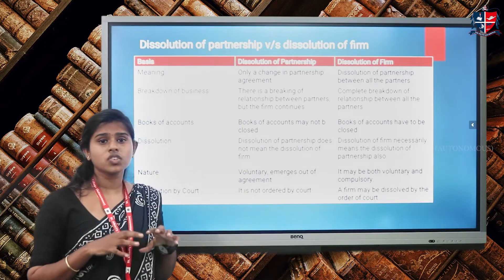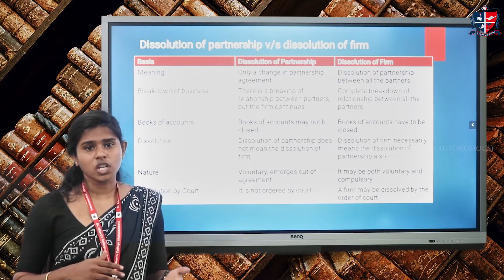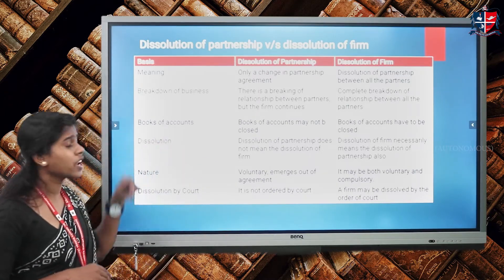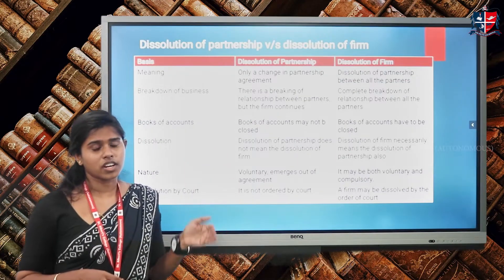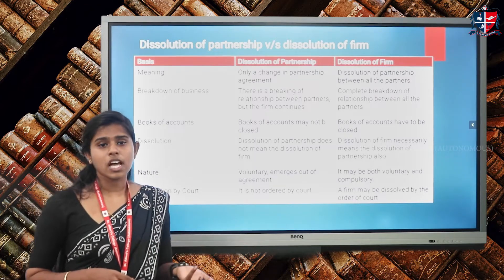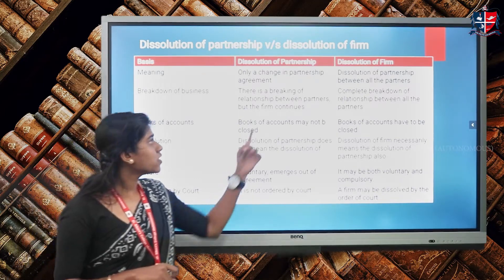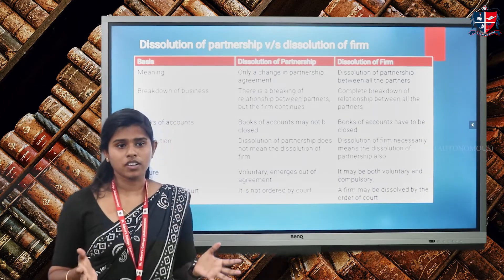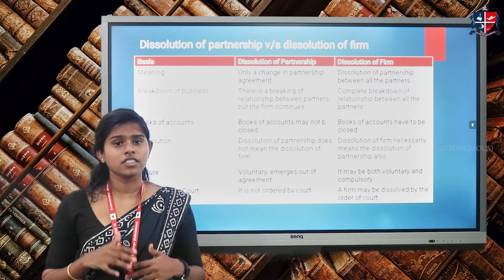In dissolution of firm, it is the dissolution between all the partners — the relationship between all the partners is breaking down and no more business is continuing. Regarding breakdown of business: in dissolution of partnership there is a breaking of relationship but the firm continues. There is only a reconstitution of the partnership agreement, which is mainly applicable in the case of admission, death, or retirement of a partner. In dissolution of firm, it is a complete breakdown of all relationships — a complete closure and winding up of the business.